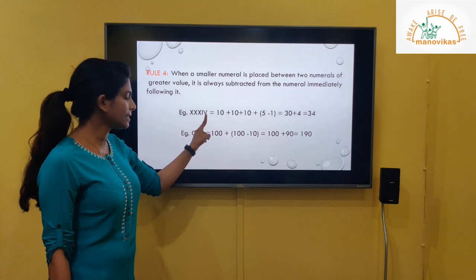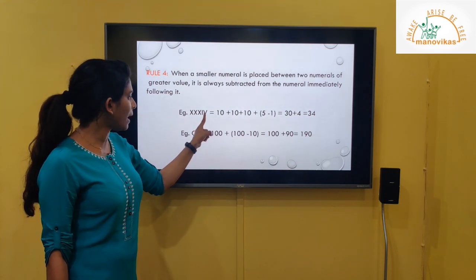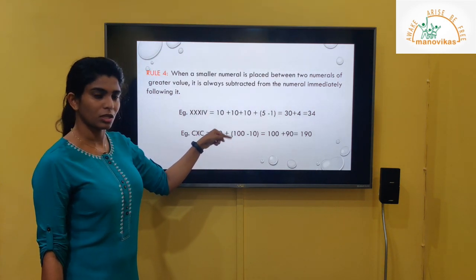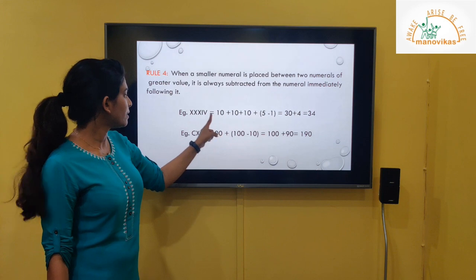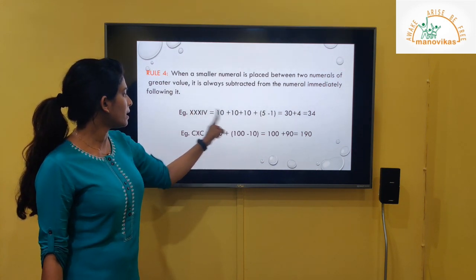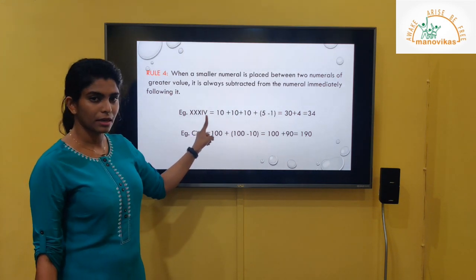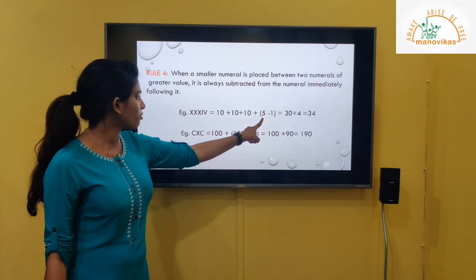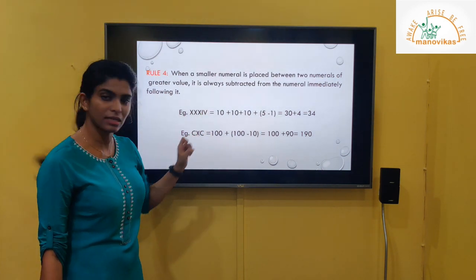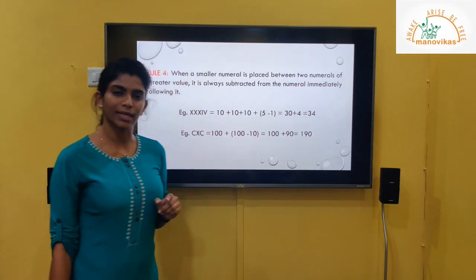I is smaller than X and V, so we have to subtract it from the number which comes after. X: the value of X is 10, three X's give 30. Now IV: V minus 1 gives 4. So 30 plus 4 equals 34.